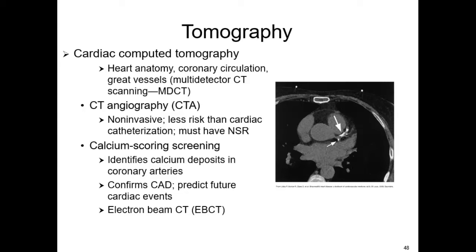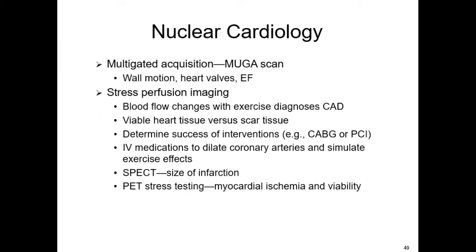For CT, we might use a CTA — which is non-invasive, injecting dye through a regular IV — versus calcium scoring screening, also very non-invasive. The MUGA scan and stress perfusion imaging involve having the person exercise, then performing an echo at the time. If they can't exercise, we give medications to mimic it.